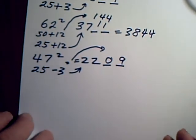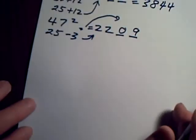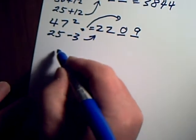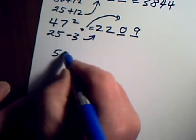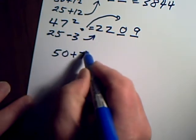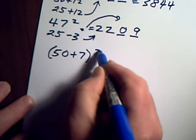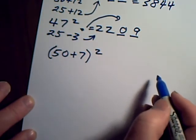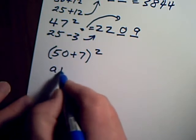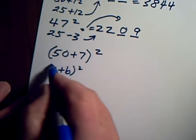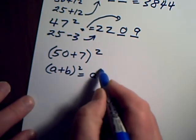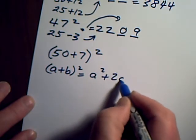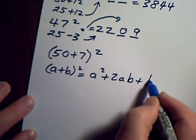Now this is why it works. Any number in the 50s can be written as 50 plus something. So let's look at 57, it's 50 plus 7 squared. Now I know that (a + b)² is equal to a² + 2ab + b².